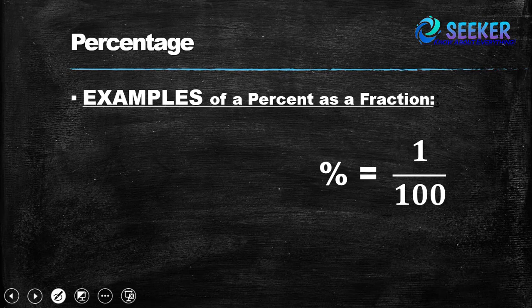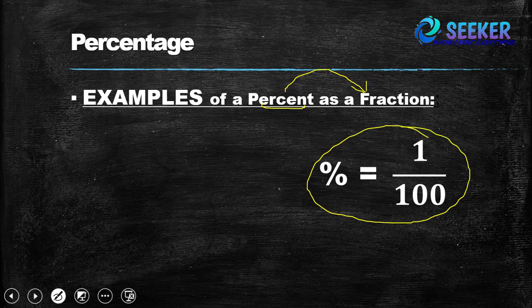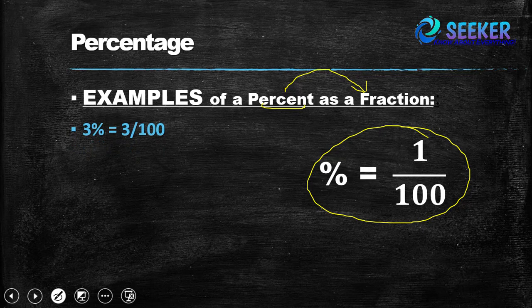Now, examples of percent as a fraction. How can we convert percent into a fraction? We have a simple rule: percent is equal to one by hundred. For example, 3% is equal to 3 by 100. Here, for percentage we write 1 by 100.